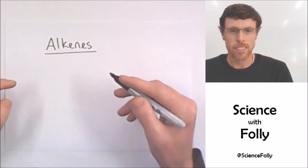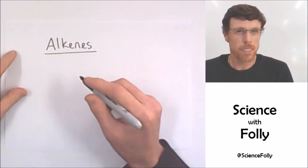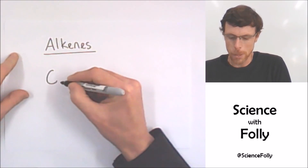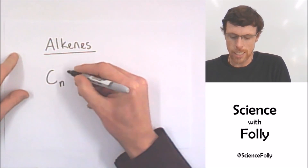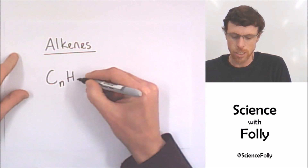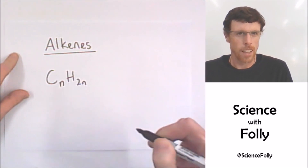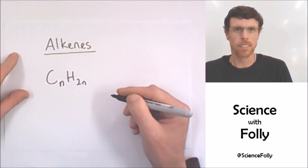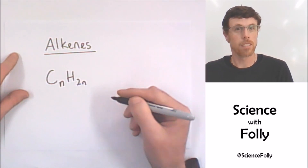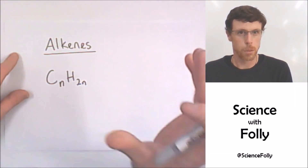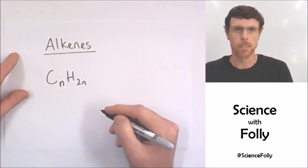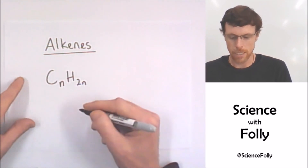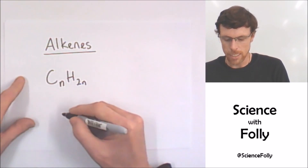Alkenes are a homologous series of hydrocarbons and they have the general formula CnH2n. The key thing about alkenes is that they have a double bond between two of the carbons in the carbon chain.